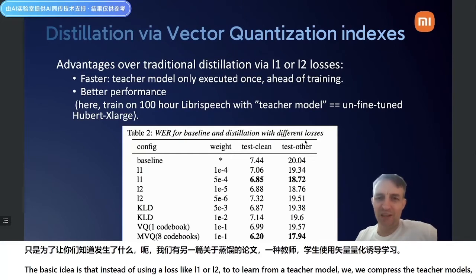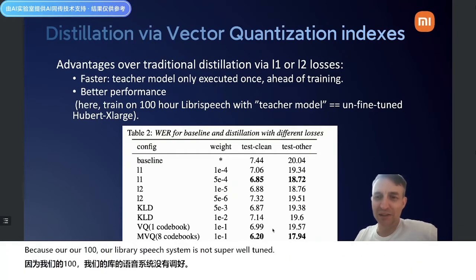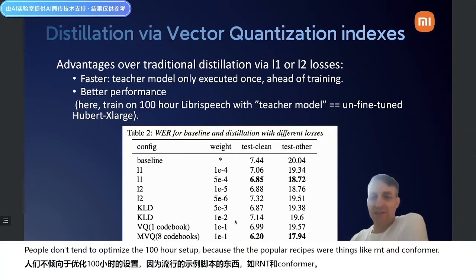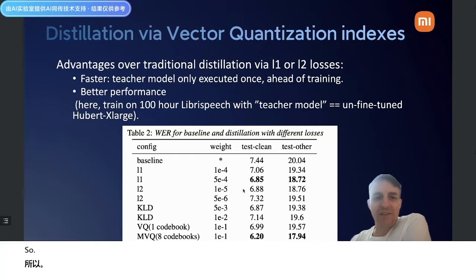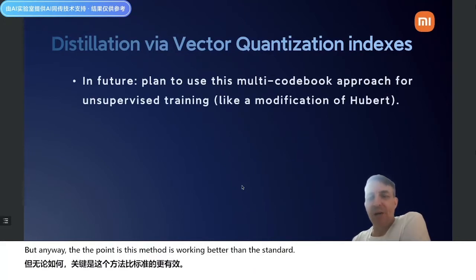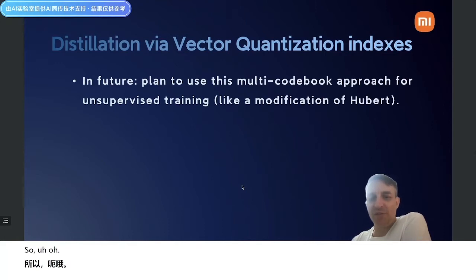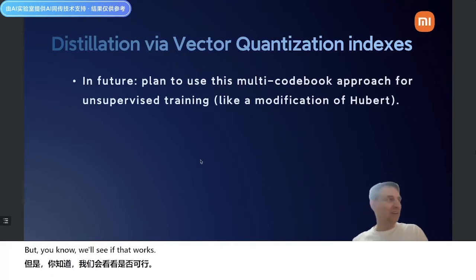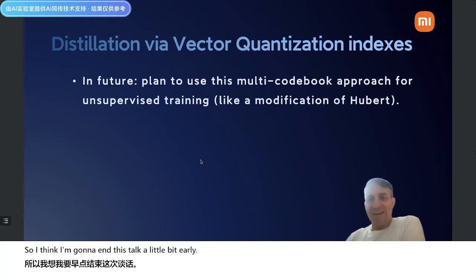The VQ distillation method works better than standard distillation methods, though absolute word error rates aren't great since our 100-hour LibriSpeech system isn't super well-tuned — popular recipes for RNN-T and conformer tend to be optimized for big data. In future, we hope to use this for our own version of unsupervised training, modifying something like HuBERT to use VQ instead of L1 or L2 loss. With that, I'll end the main talk and open up for questions.